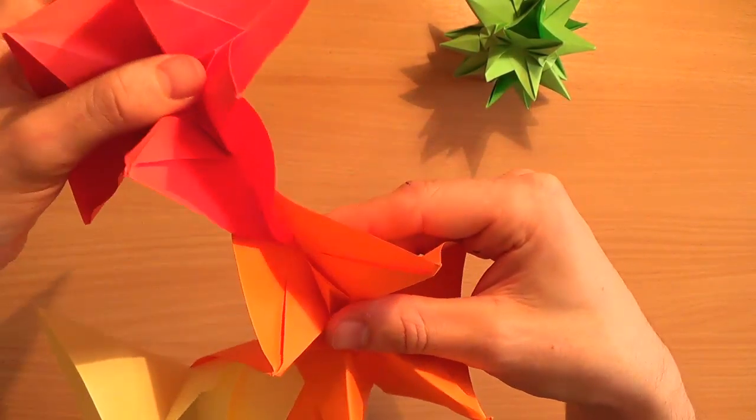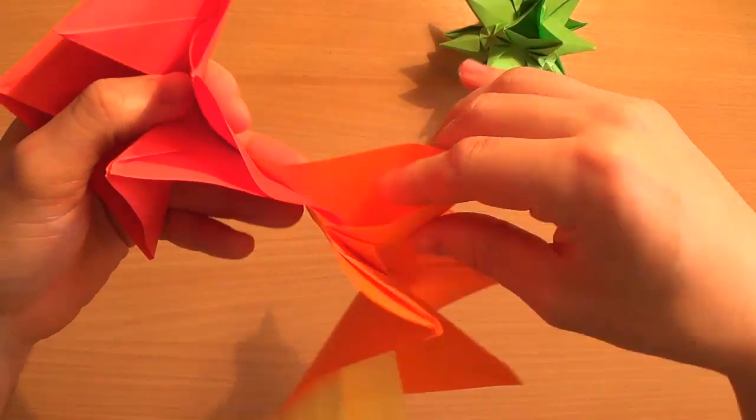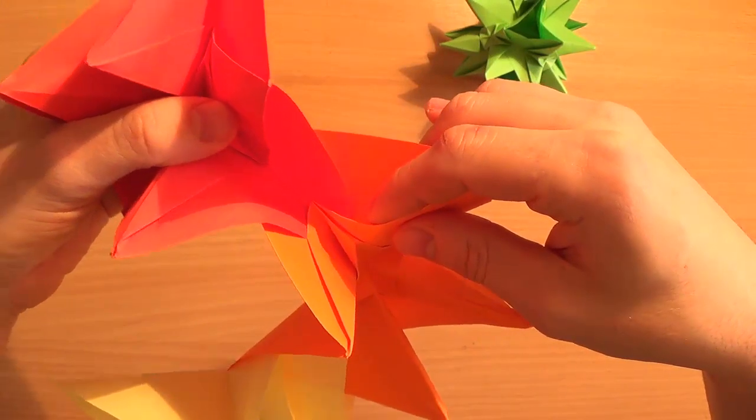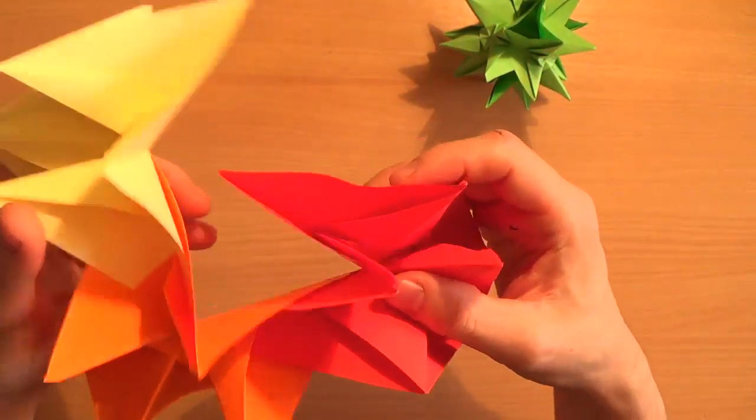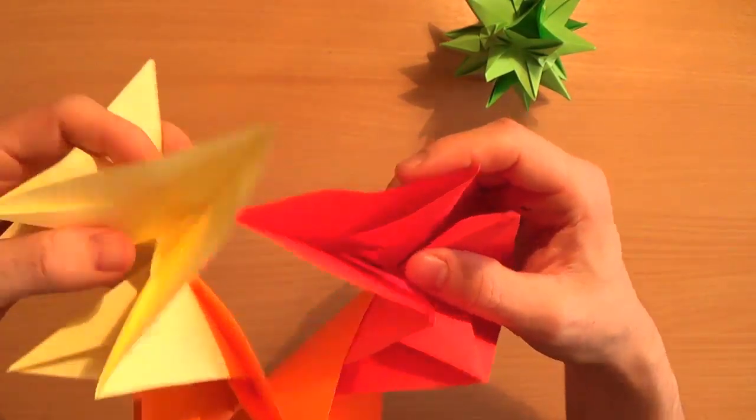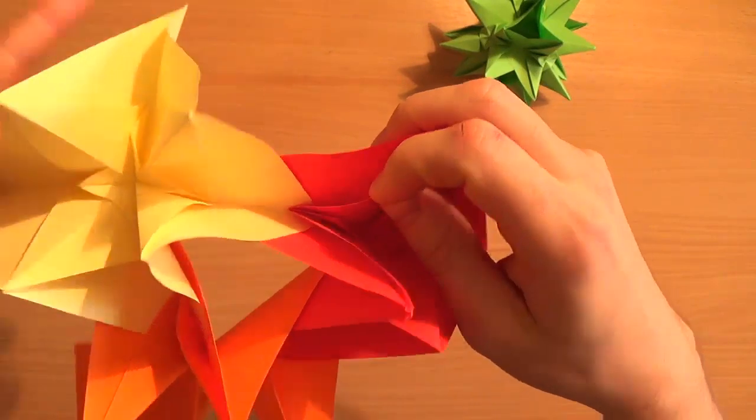Right. Red one into the orange one. Put the red flap underneath the orange part. And then we'll do the last one just to show you how to put them together. Put the yellow one into the red one. Put the yellow underneath the red like that.